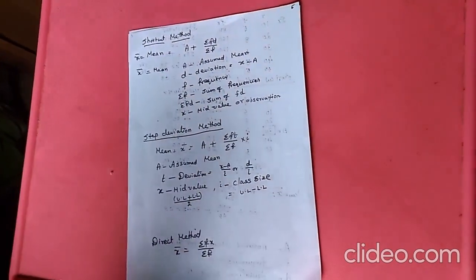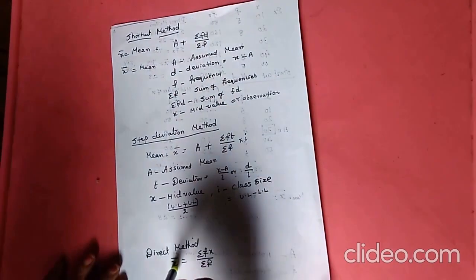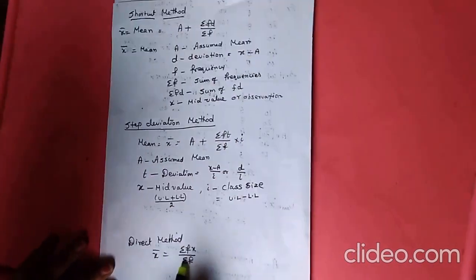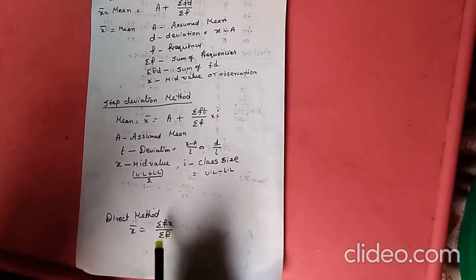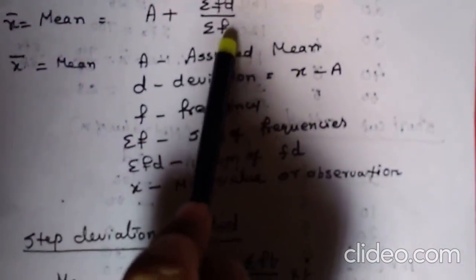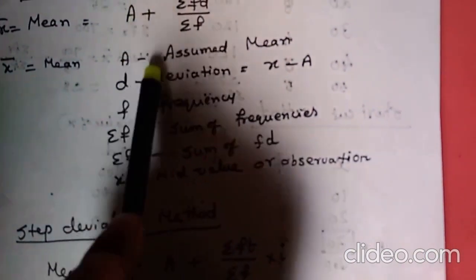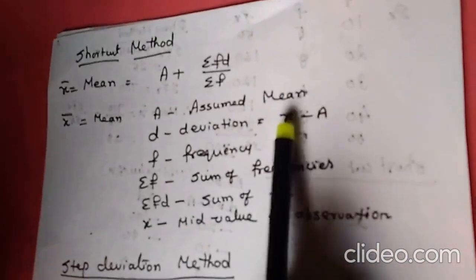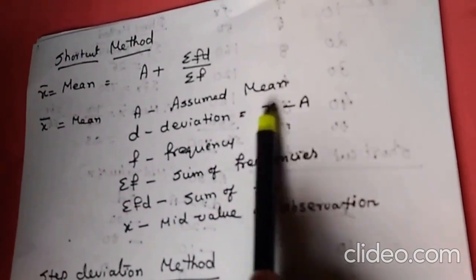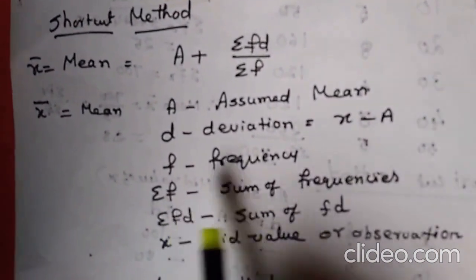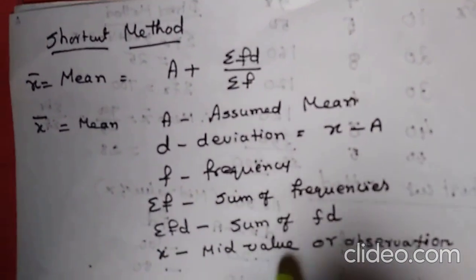For the shortcut method, the mean formula is x-bar = a + sigma fd divided by sigma f. Here, a is called the assumed mean — we have to assume some mean. D represents deviation, which is x minus a, where x is the mid value of the observation. F represents frequency. Sigma f represents sum of frequencies and sigma fd represents sum of fd.